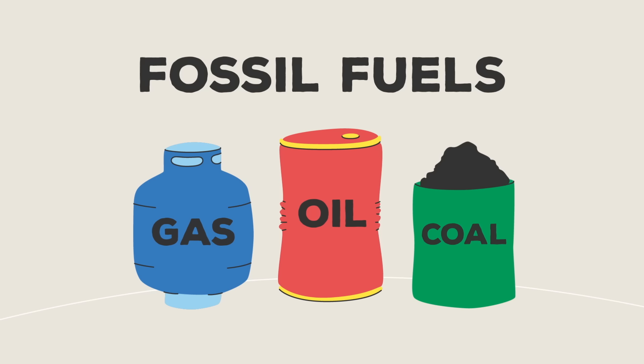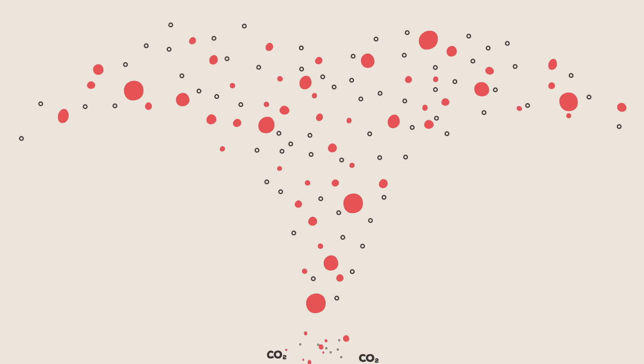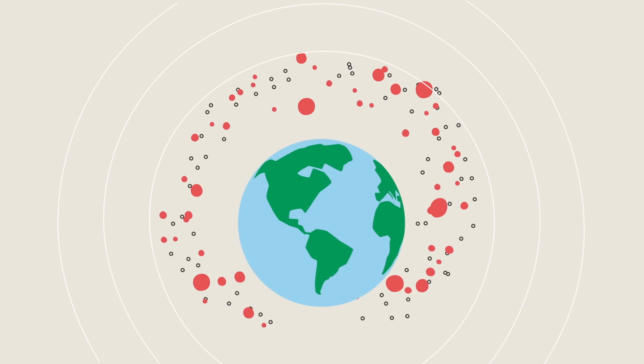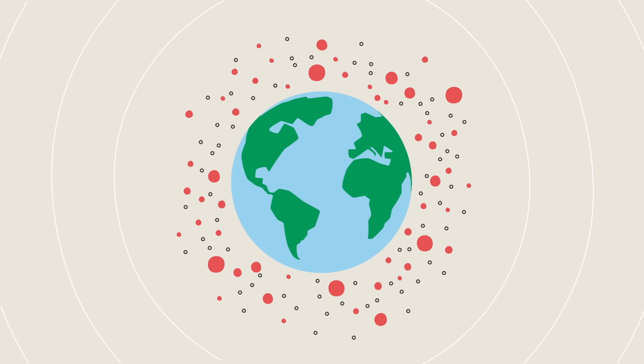So how did we get here? Almost everything that makes modern life possible relies on fossil fuels: coal, oil, and gas, full of carbon from ancient organic matter. When we burn fossil fuels, we release carbon dioxide that builds up in our atmosphere, where it remains for hundreds or even thousands of years, letting heat in, but not out.